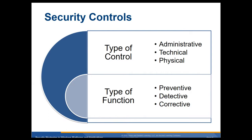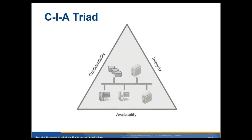Here's your CIA triad. You have confidentiality — make sure only the people that are allowed to see it can see the data. Integrity — make sure that it has not been changed, whether in transit or at rest. And availability — make sure it's always available so you don't have a denial of service.